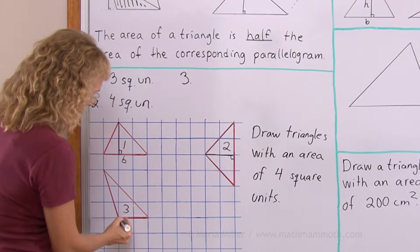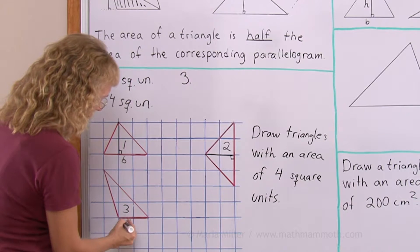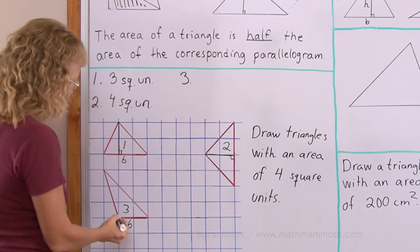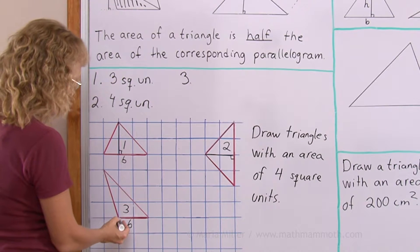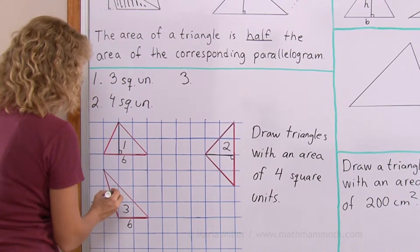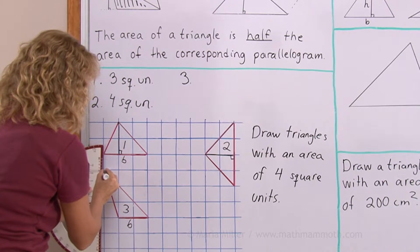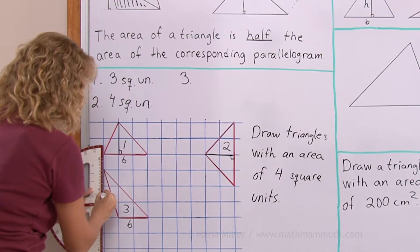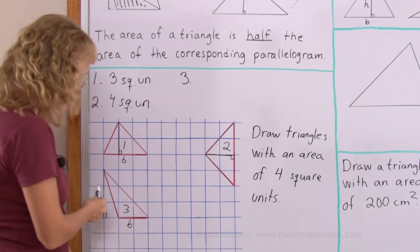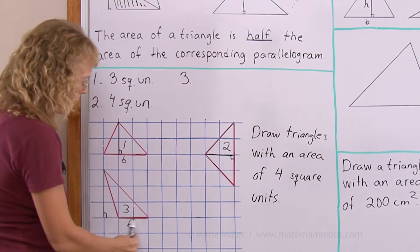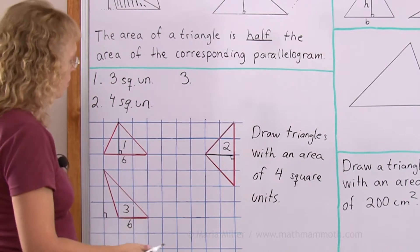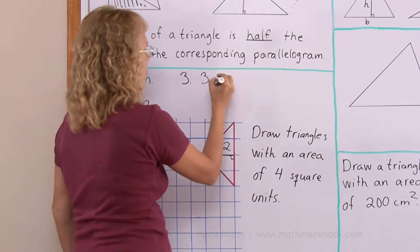I'm going to make this side my base — two units. This time, my vertex being here, the altitude will fall outside the triangle. It is three units. So three units times two units is six, divided by two — three square units.